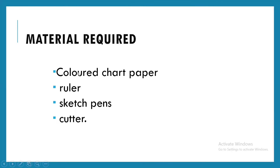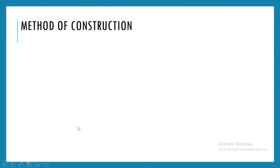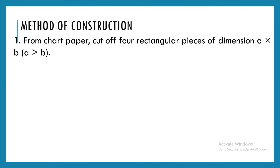Let us try doing the activity. The material required is colored chart paper, ruler, sketch pens, and a cutter. I will take a chart paper and cut off four rectangular pieces of dimensions A by B — length A and breadth B. They can be of same color or different colors. Aesthetically, they will look better if we use four different colors.